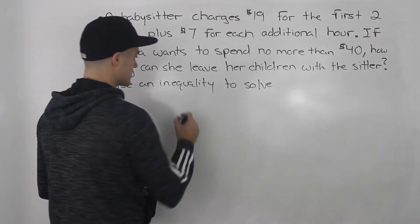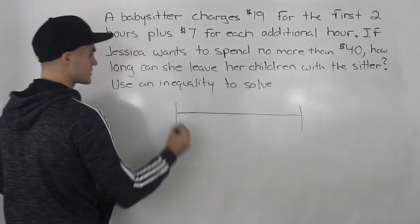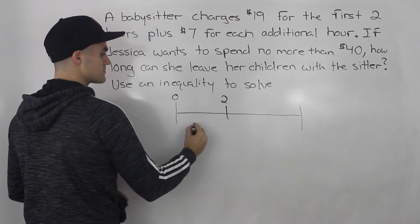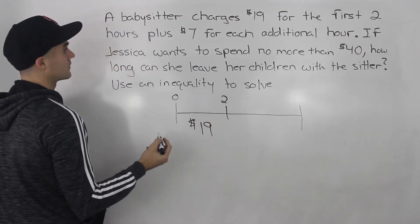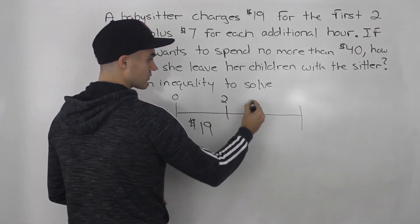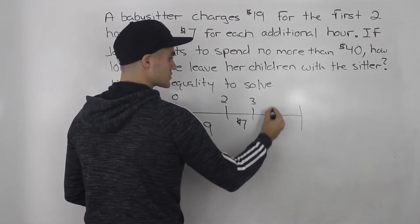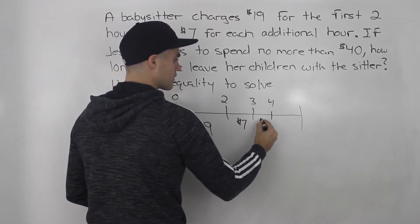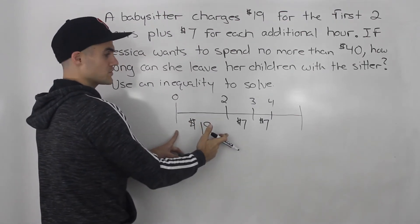Let's show on a diagram what's going on. For the first two hours, this babysitter charges $19. And for every additional hour after that, she's charging $7 per hour. We can think of this $19 as a fixed cost for the first two hours.